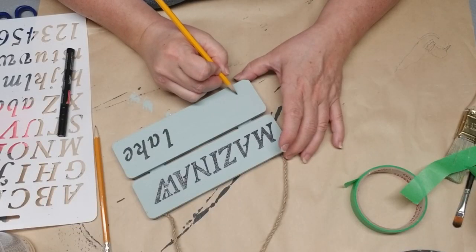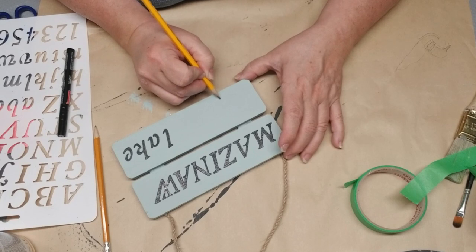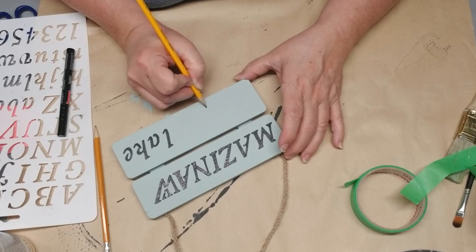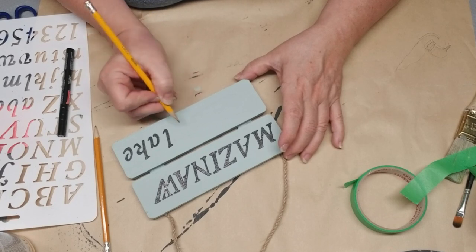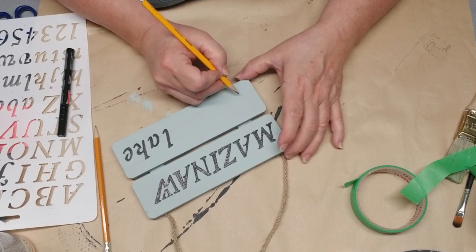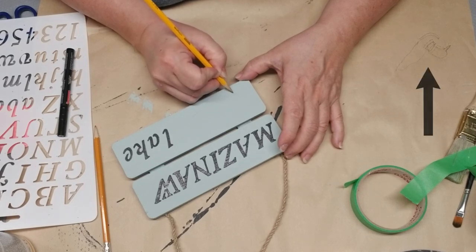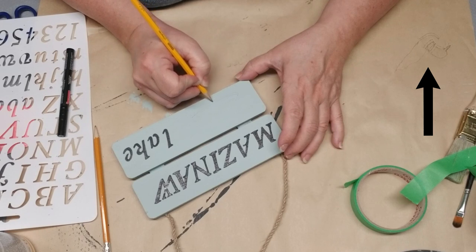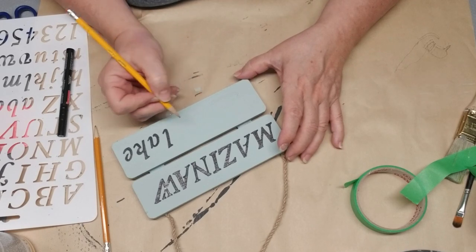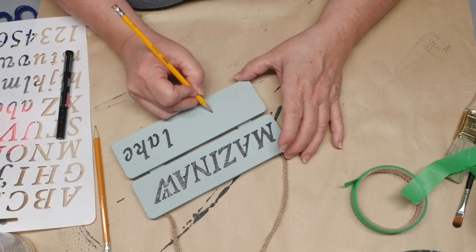On our lake, we have a pair of loons that live there year-round. They're the same pair every year, and every spring they have one or two little babies. We always enjoy listening to them. I found a picture of a loon online and did a little practice drawing. If you can see up in the right-hand corner, it's just a little pencil outline. Now I'm going to repeat that on the sign and fill it in with my Craftsmart paint pen.